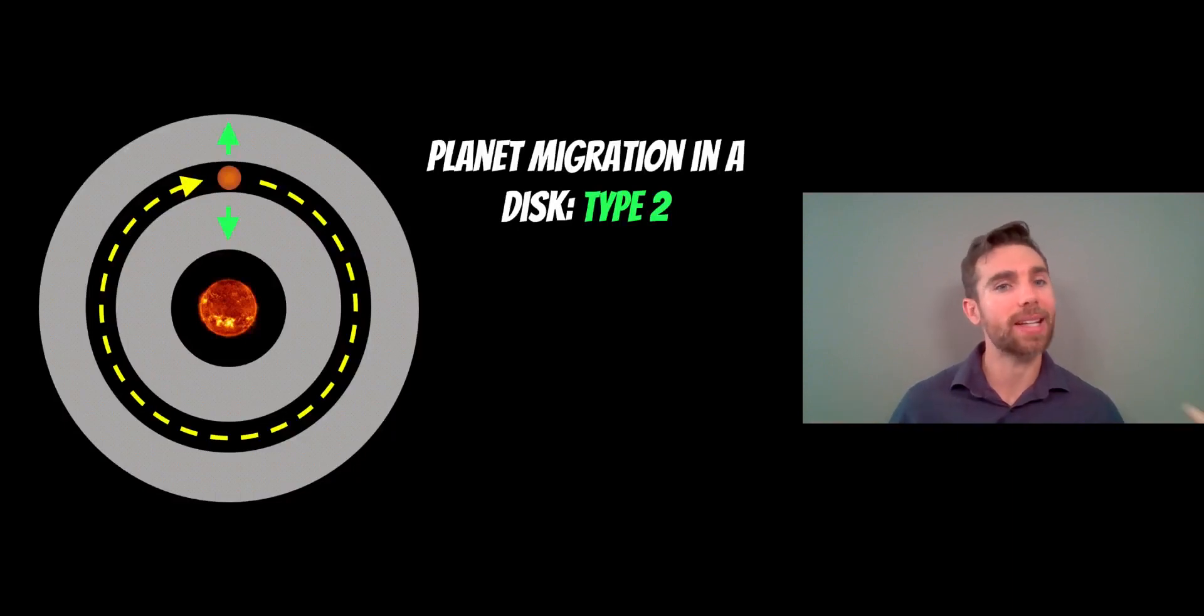Welcome to this video about planetary migration. We're going to look at the migration of a planet in a disk around a star, typically during the formation process of planets while stars are still quite young. There are a few different types of migration that can occur in this scenario. We're going to look at type 2 for this particular video.